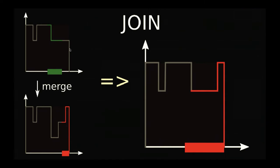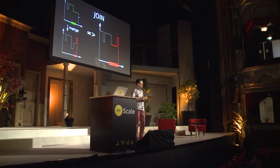When a device leaves the system, first we merge the information into the information of another device — like with version vectors, we take the maximum of those curves — and then we give back our share of the interval to the device. The beauty of this system is that no device has to know about all the other devices in the system.